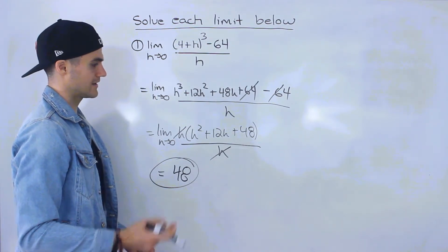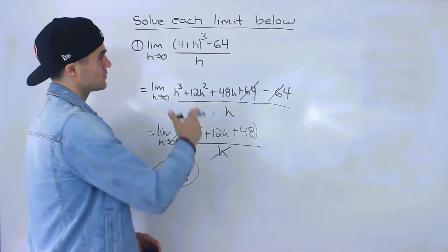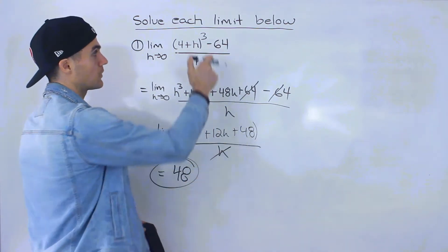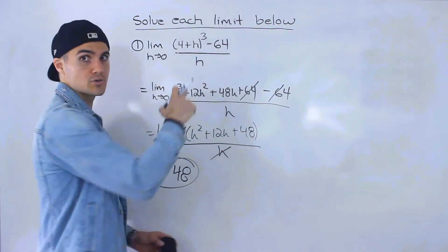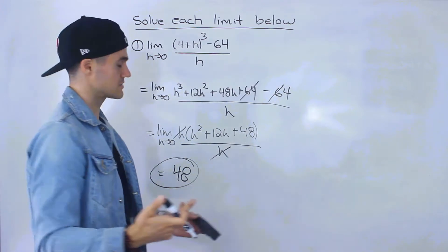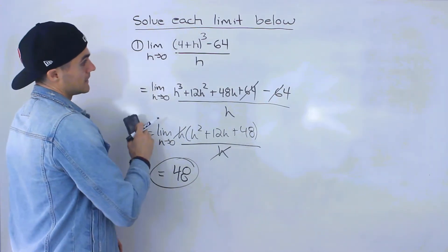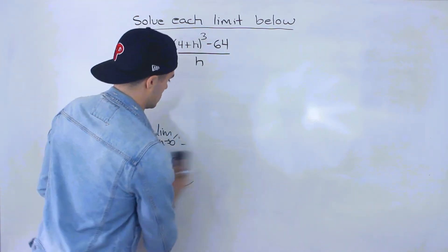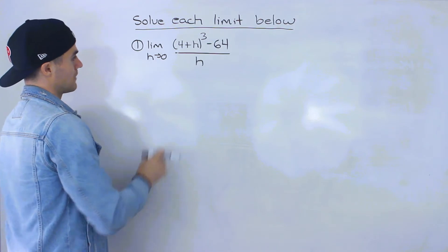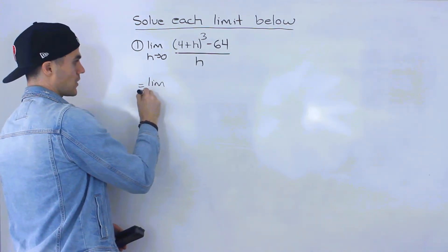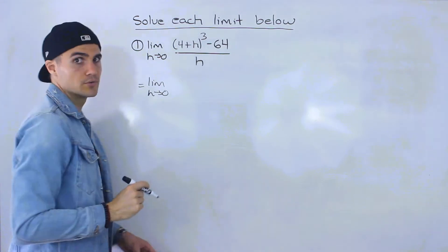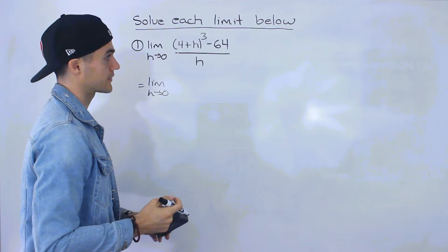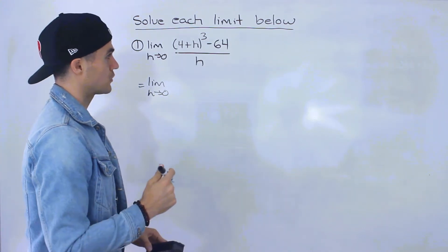So 48 is the answer to this limit. This is the first method — not my favorite, especially when you start having higher exponents, because it gets a lot more messy. Like what if this was to the power of four or six? It starts getting pretty crazy if you want to expand. Now method two, which is actually my preferred method, takes work as well — no matter which method you do, you're going to have to do a lot of work, especially with higher exponents.